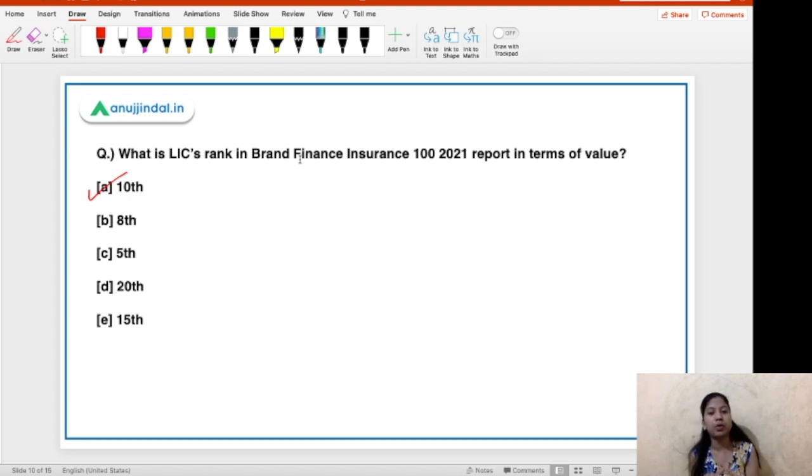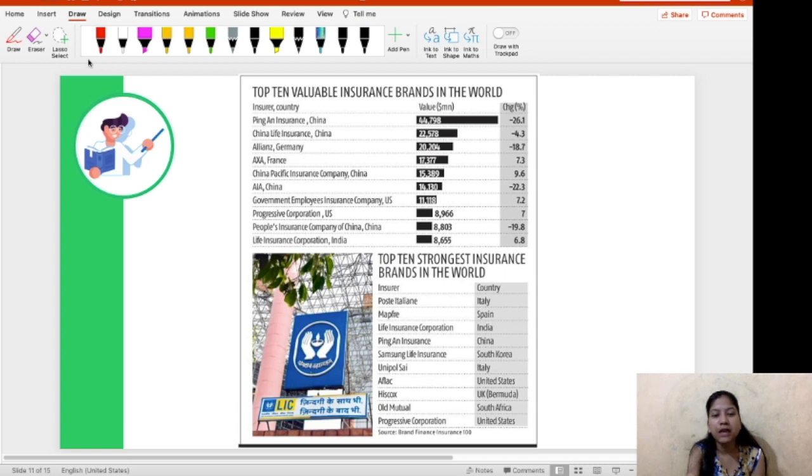Brand Finance is basically a brand valuation consulting firm based in London. So, this is something, a very background fact that you should know about this report or this ranking that has been released. Apart from this, the fact related to this report that is of importance to us is that this report is divided into two parts or we can say this report has given ranking into two parts. And what are these two parts? The first part is the ranking on the basis of valuation of companies. So, the value of the companies as well as their rankings have been decided in this first ranking.